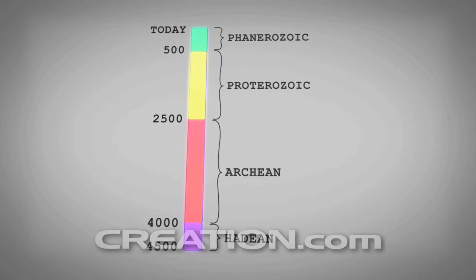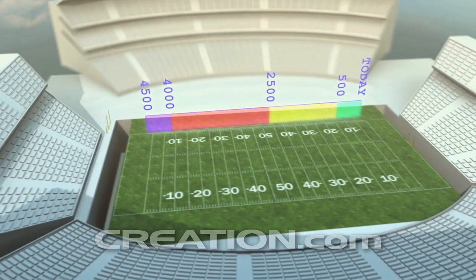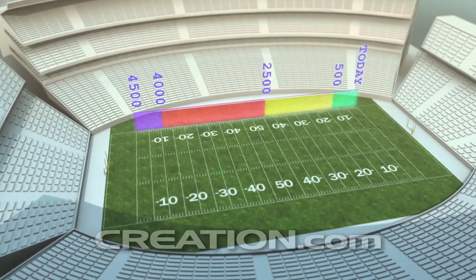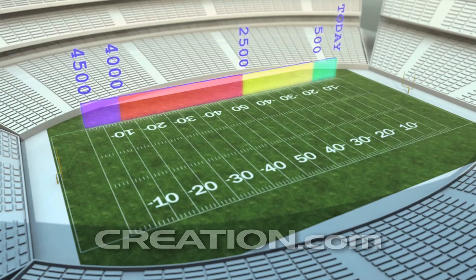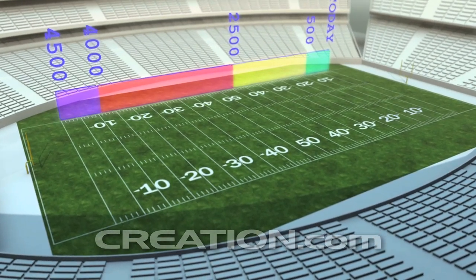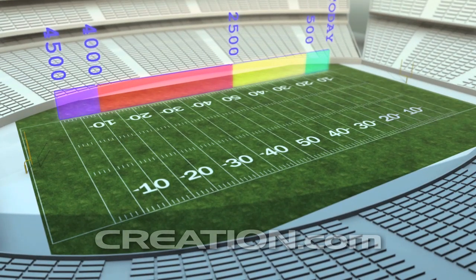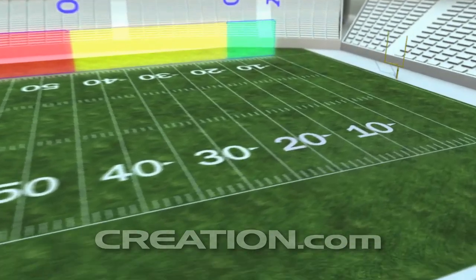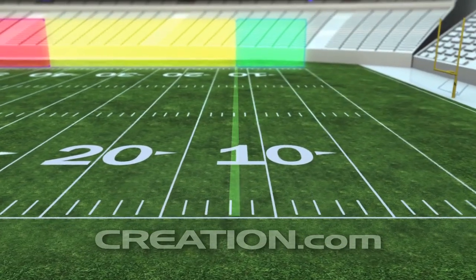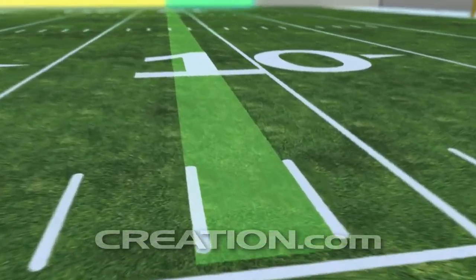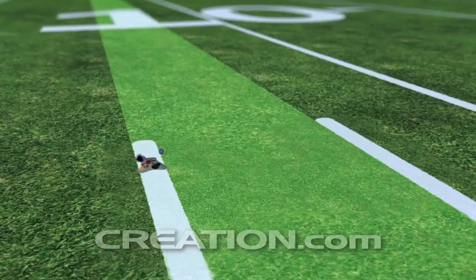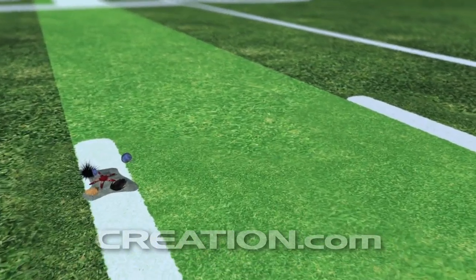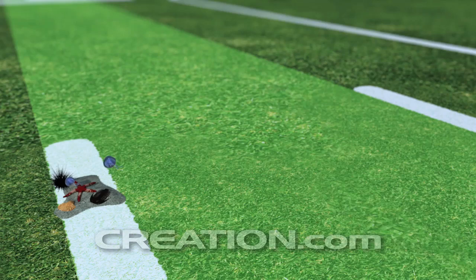To put the Cambrian Explosion in context, let's think of Earth history like a football field. On an old-age system, the beginning of the Earth at one end zone is 4.5 billion years ago, and the present is at the other end zone. The Cambrian starts all the way across the field at the opposing team's 12-yard line and extends for one full yard. The Cambrian Explosion, where we see the first appearance of all these different animal body plans — these phylum-level divisions — happens in just four inches.